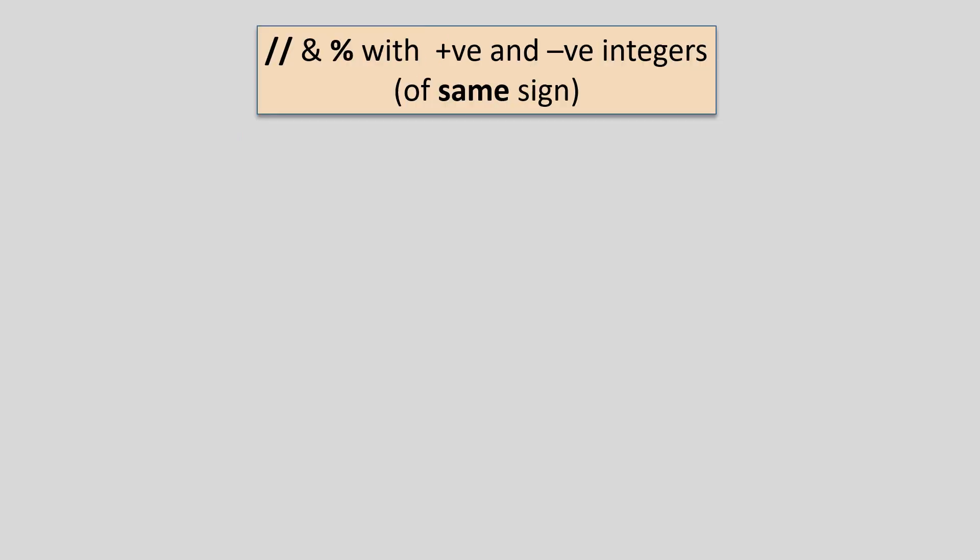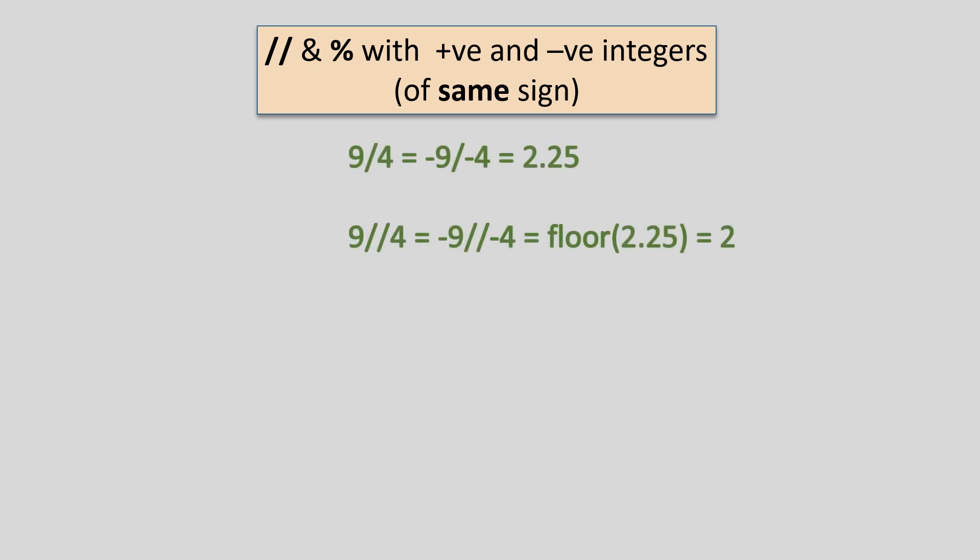Let us now see how floor division and modulo operators work with positive and negative operands. First, we shall see operands of the same sign. To keep things simple, we shall work with very small numbers: 9 and 4. Whenever we have operands with the same sign, the quotient is always positive. Like in the case of 9 divided by 4 and minus 9 divided by minus 4, the quotient is 2.25. Therefore, floor division of 9 by 4 or minus 9 by minus 4 returns the floor of 2.25, which is 2.